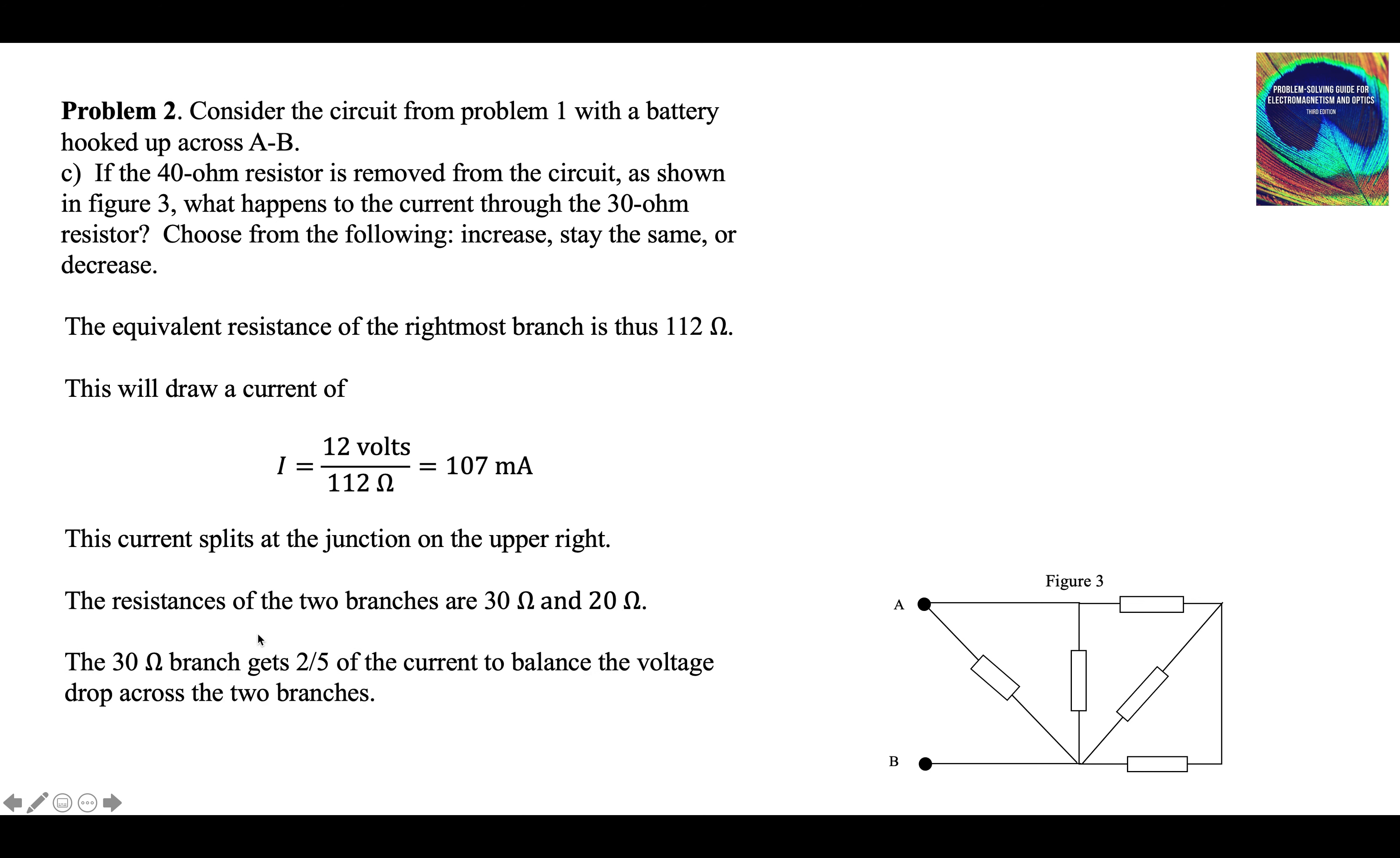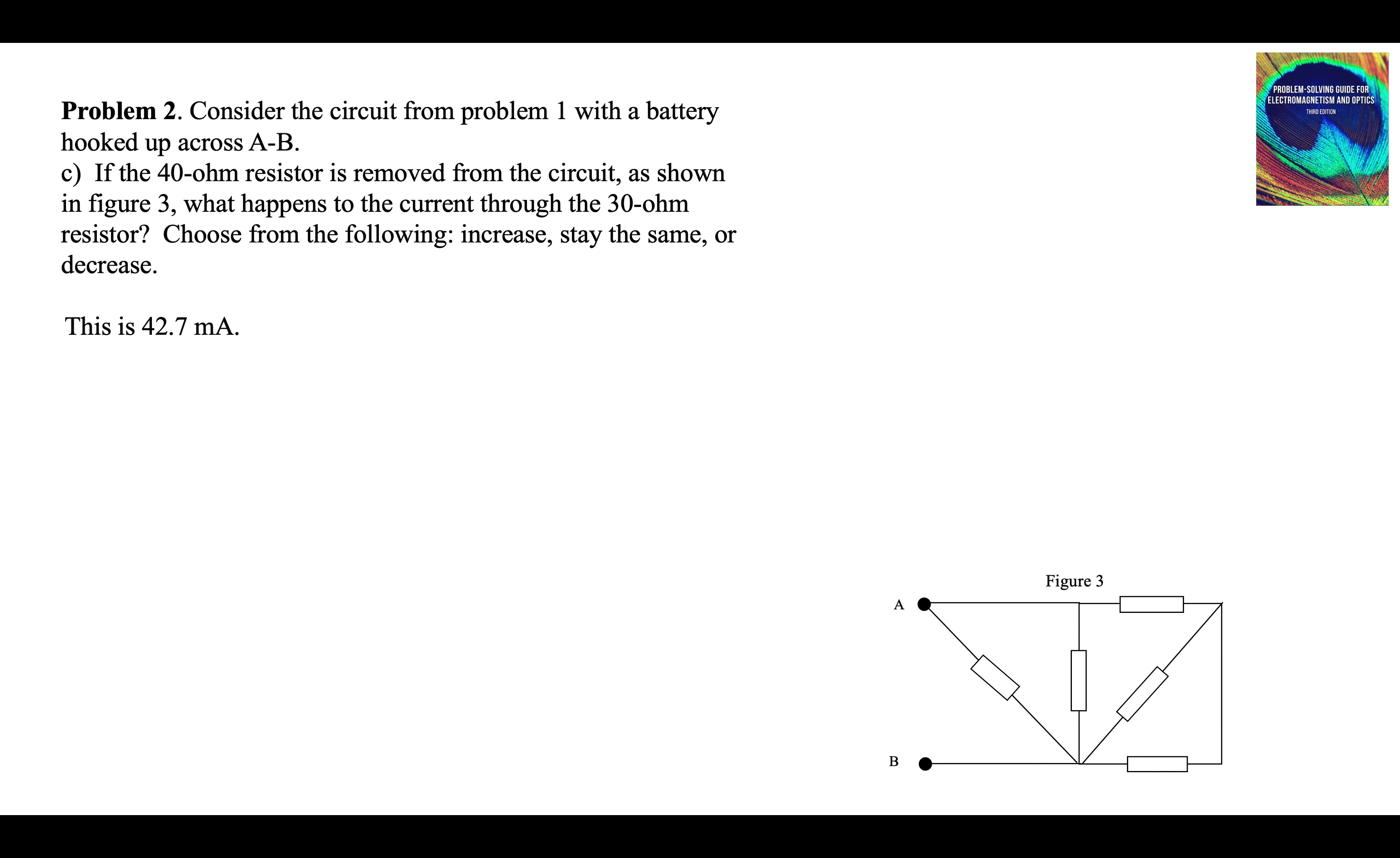There's the 30 and the 40. The 30 gets only two-fifths of it to balance the voltage drop across the two branches. The voltage drop across the 30 has to be the same as the voltage drop across the 20. That's 42.7. So we have 107 coming in here. 42.7 goes through the 30.